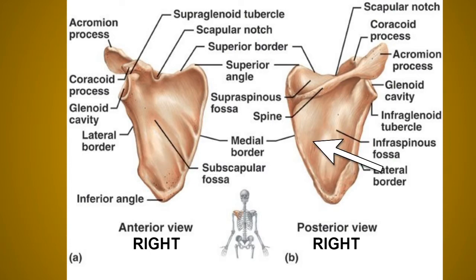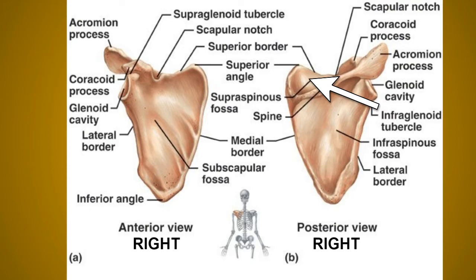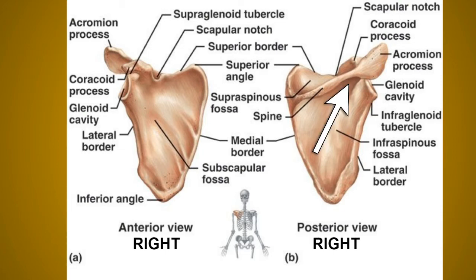The dorsal surface gives attachment to the spine of the scapula, which divides it into two main fossae: the supraspinous fossa and the larger infraspinous fossa. The supraspinous fossa is smaller and the infraspinous fossa is comparatively large. The two fossae are connected by the spinoglenoid notch, which is situated lateral to the root of the spine.